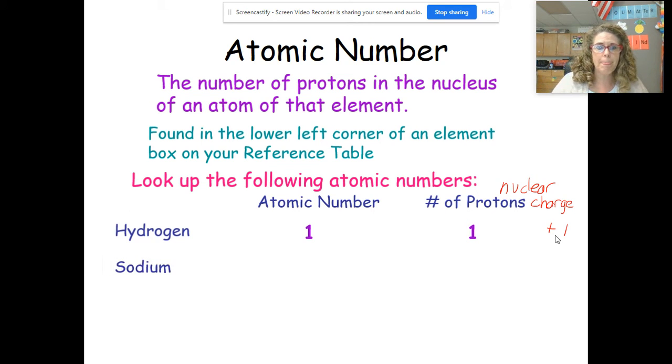So now we have sodium. The atomic symbol is Na because it comes from its Latin natrium. Here the atomic number is 11, so the number of protons is 11 and it has a positive 11 nuclear charge.